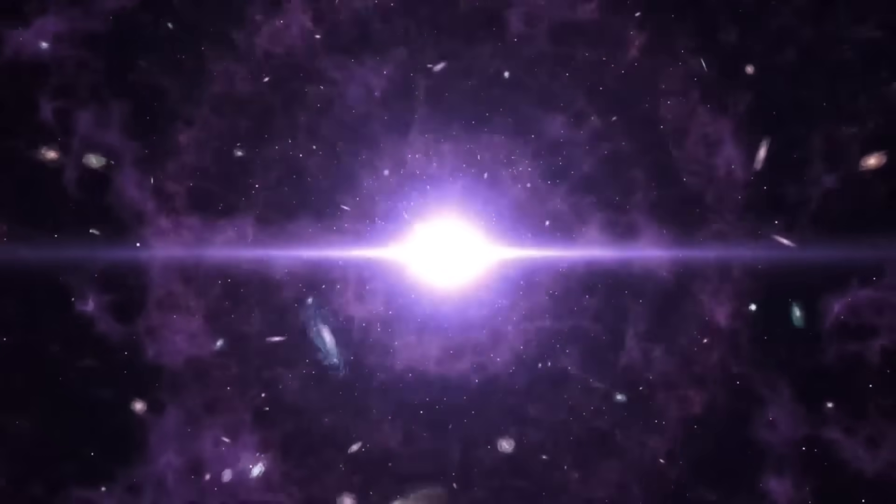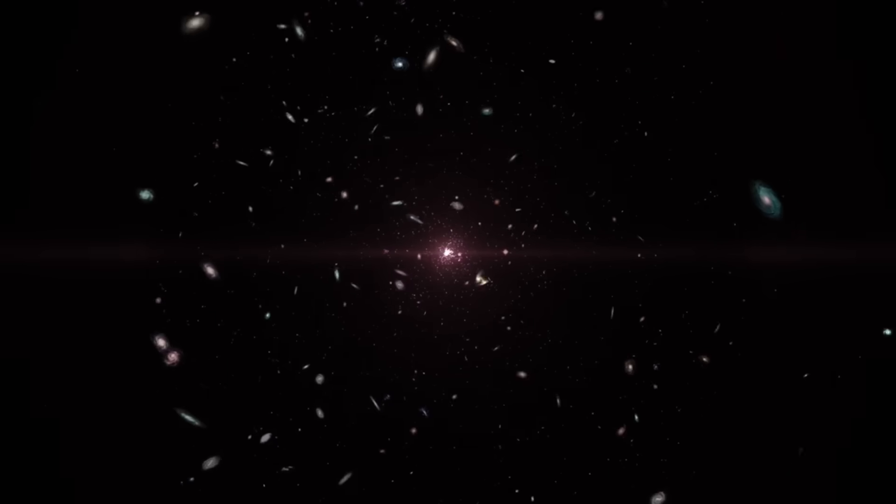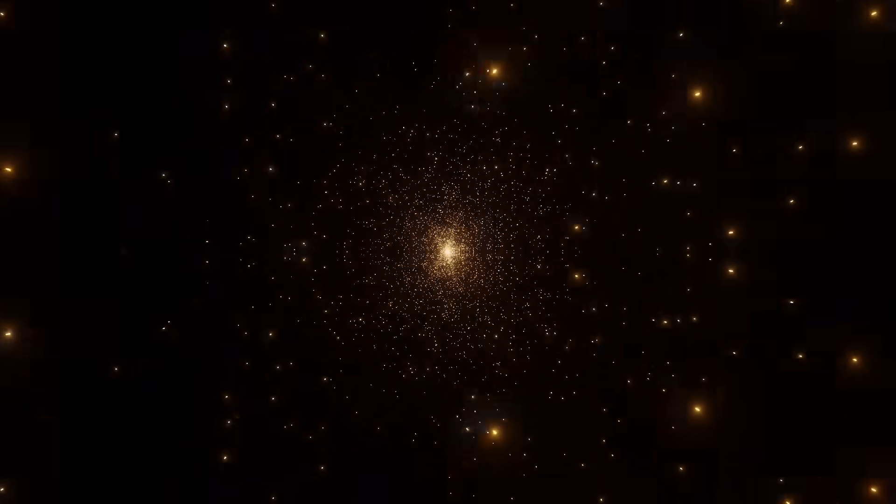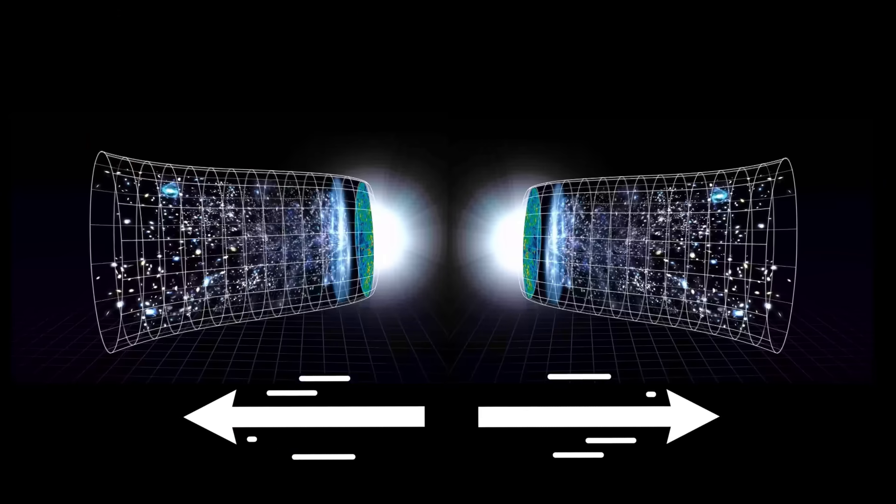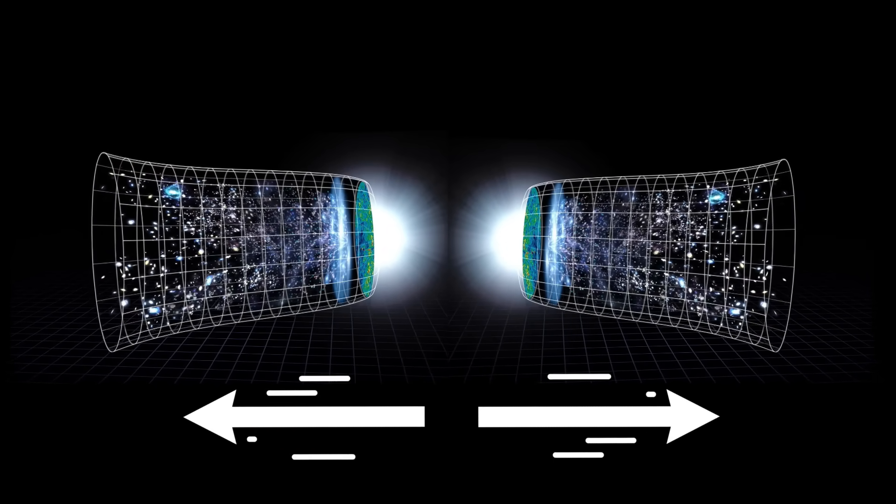This property could mean that rather than being shaped by an explosive event like inflation, the universe's uniformity might arise naturally from this symmetry. They propose that the initial singularity, instead of being a one-way origin, acts like a mirror in time. On one side, time flows forward, and on the other, it flows backward, like a cosmic reflection.